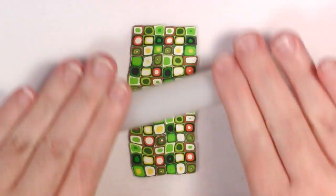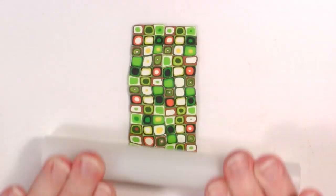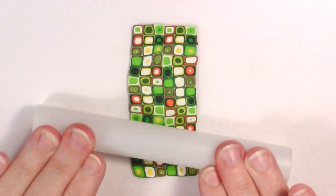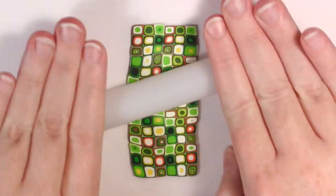Now, you want to start rolling it out lightly at first so the pieces don't stick to your roller. Once they start fusing together, you can start pushing a little bit harder.